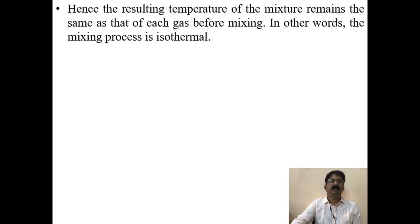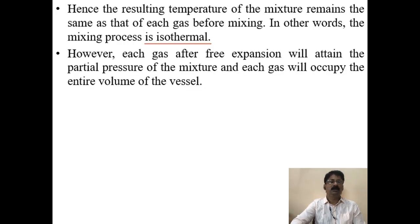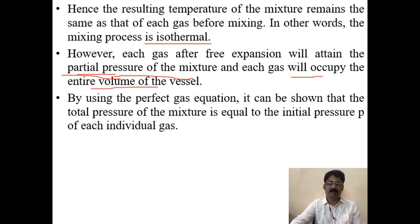The resulting temperature of the mixture remains the same as that of each gas before mixing, since all gases were initially at the same temperature. Even after mixing, the temperature remains the same, making the process isothermal. Each gas after free expansion attains the partial pressure of the mixture, occupying the entire volume. Using the perfect gas equation, the total pressure of the mixture equals the initial pressure P of each individual gas.